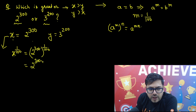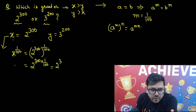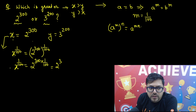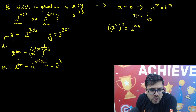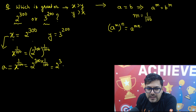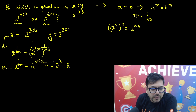So it will be 300 multiplied by 1 by 100, which gives us 2 raised to power 3. We have x raised to power 1 upon 100 — I can call this a new number, say a. So a equals 2 cubed, which is 8. Very much solvable.